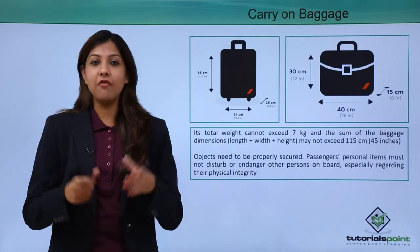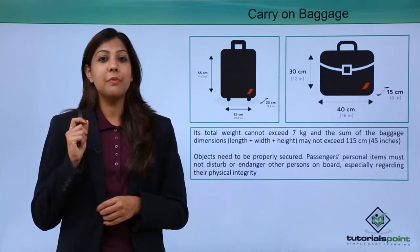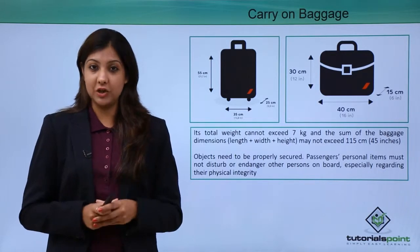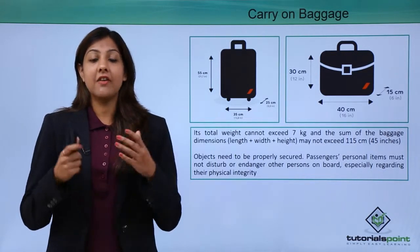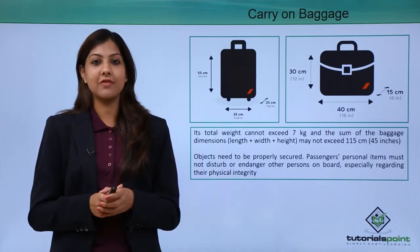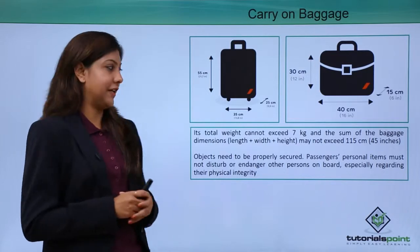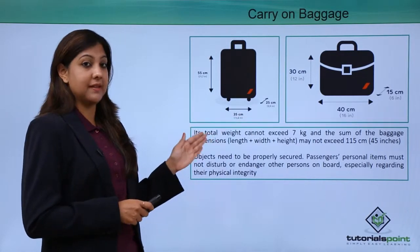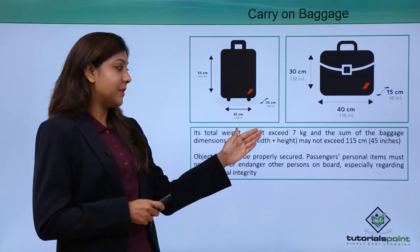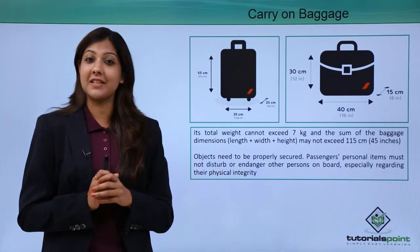Certain protocols apply to carry-on baggage. You cannot carry very large suitcases or handbags as cabin baggage. The total weight of carry-on baggage cannot exceed 7 kg. This is because if everybody carries very heavy baggage inside the cabin, the total weight of the aircraft becomes too much and can interfere with takeoff and landing. The sum of baggage dimensions — length, width, and height — may not exceed 115 centimeters or 45 inches.